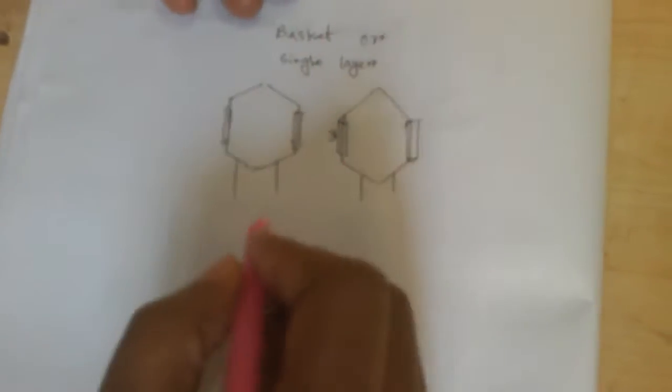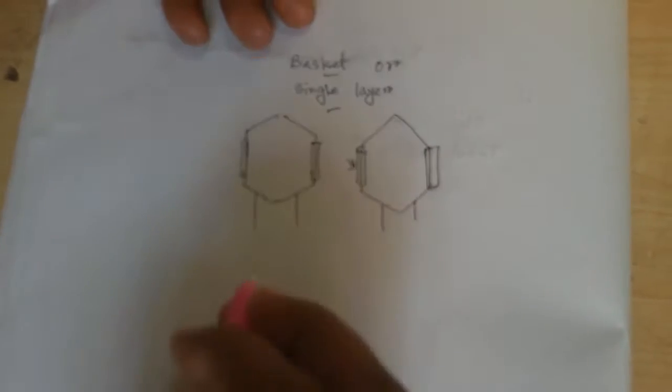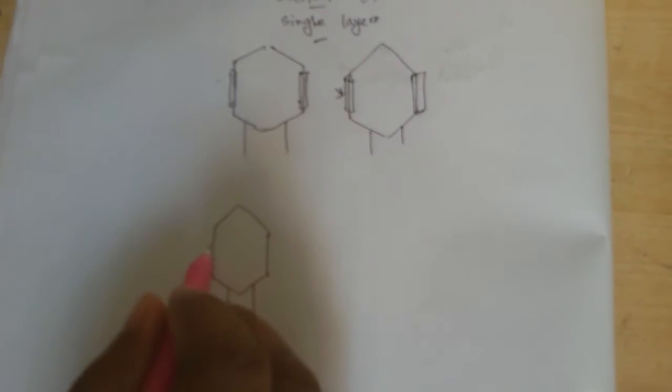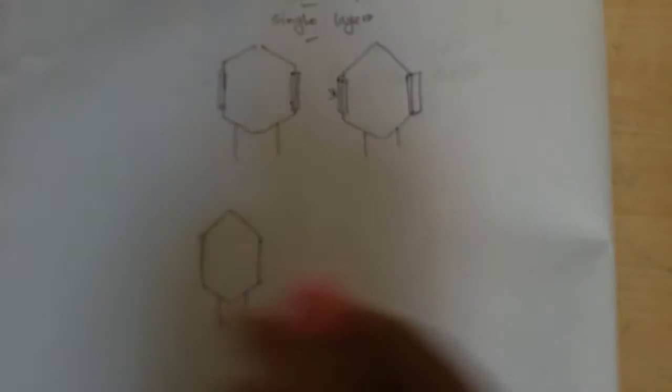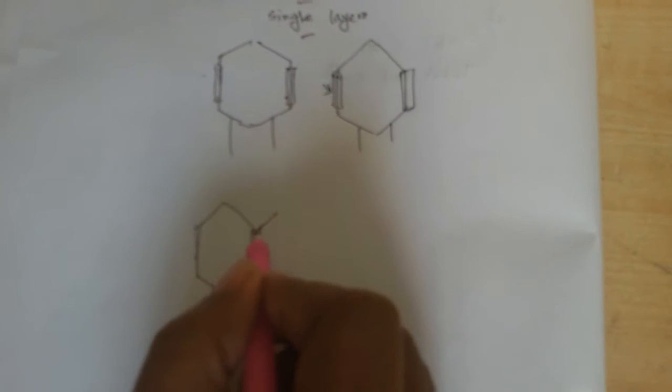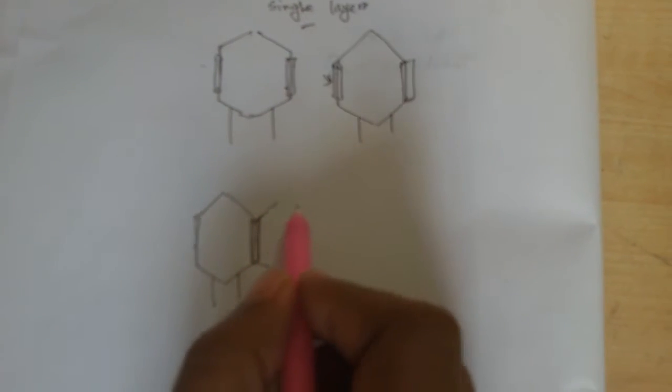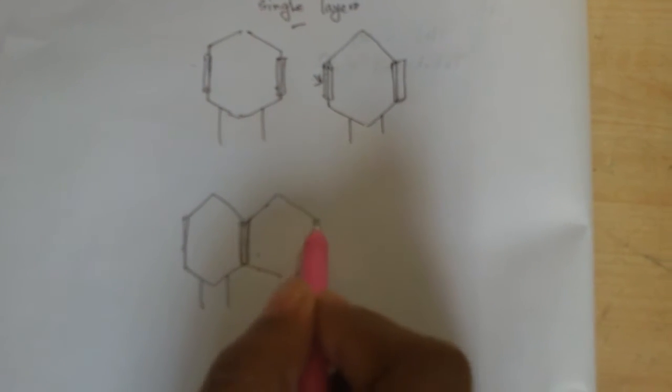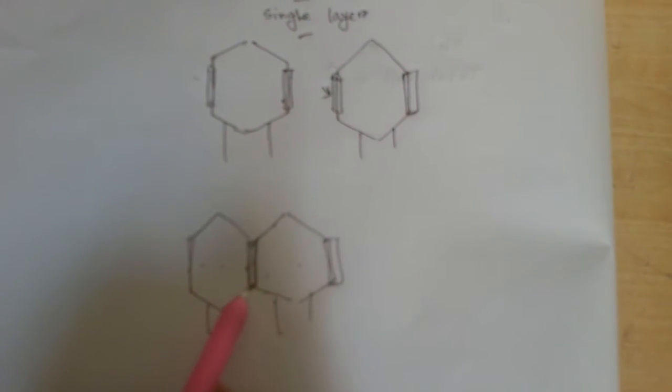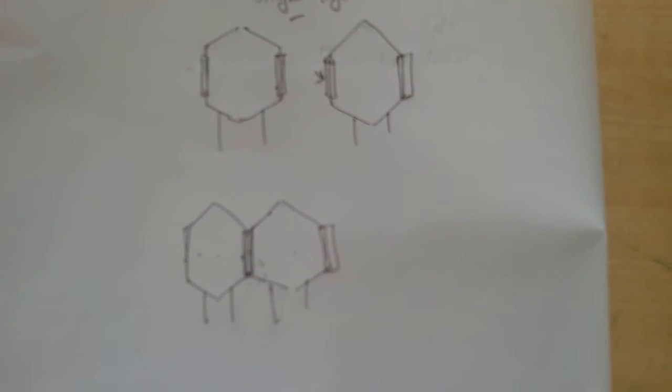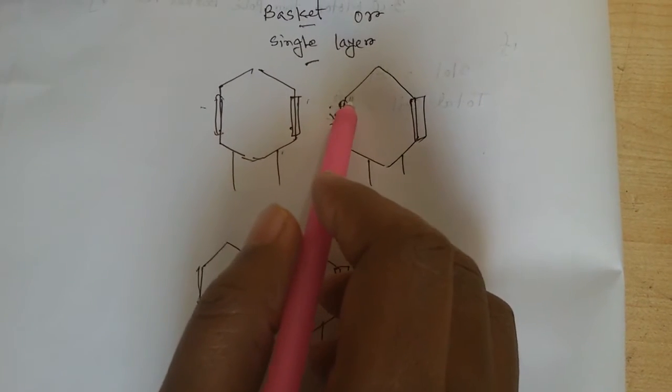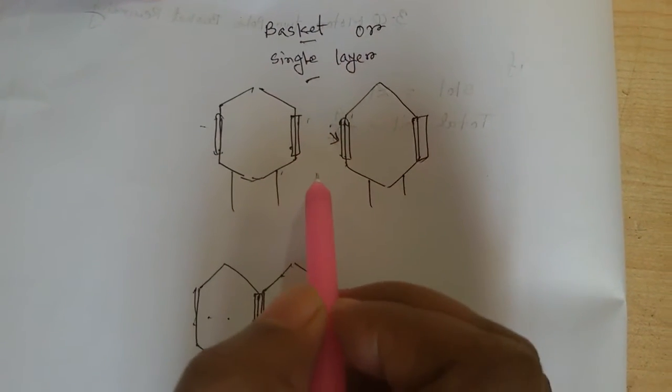That's called single layer or basket. If a coil has two sides, when a slot has two coil sides, this coil one side and this coil one side, that time this rewinding name is double layer or chain rewinding. And this rewinding name is single layer or basket rewinding.